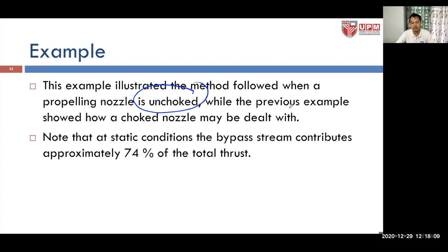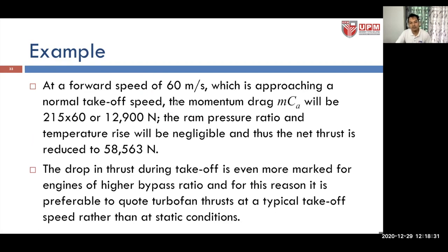This example illustrated the method followed when a propelling nozzle is unchoked, while the previous turbojet example showed a choked nozzle. Note that at static conditions, the bypass stream contributes approximately 74% of the total thrust. At a forward speed of 60 m/s, approaching a normal takeoff speed, the momentum drag equals 12,900 N and the net thrust is reduced to 58,000 N. The drop in thrust during takeoff is even more marked for engines of higher bypass ratio, so it is preferable to quote turbofan thrust at a typical takeoff speed rather than at static conditions.